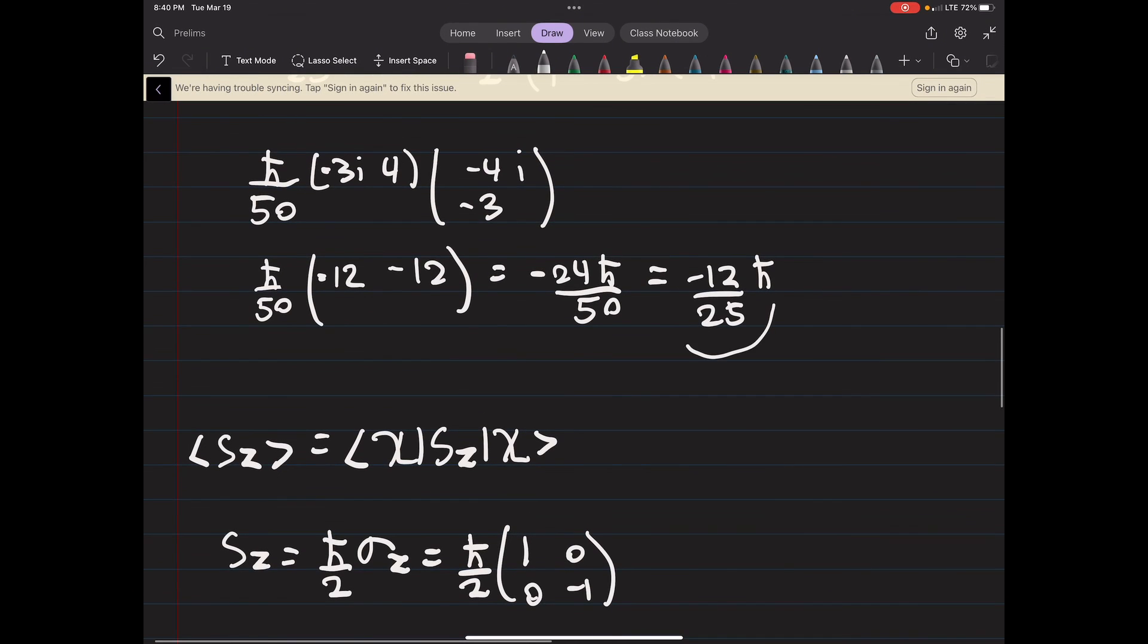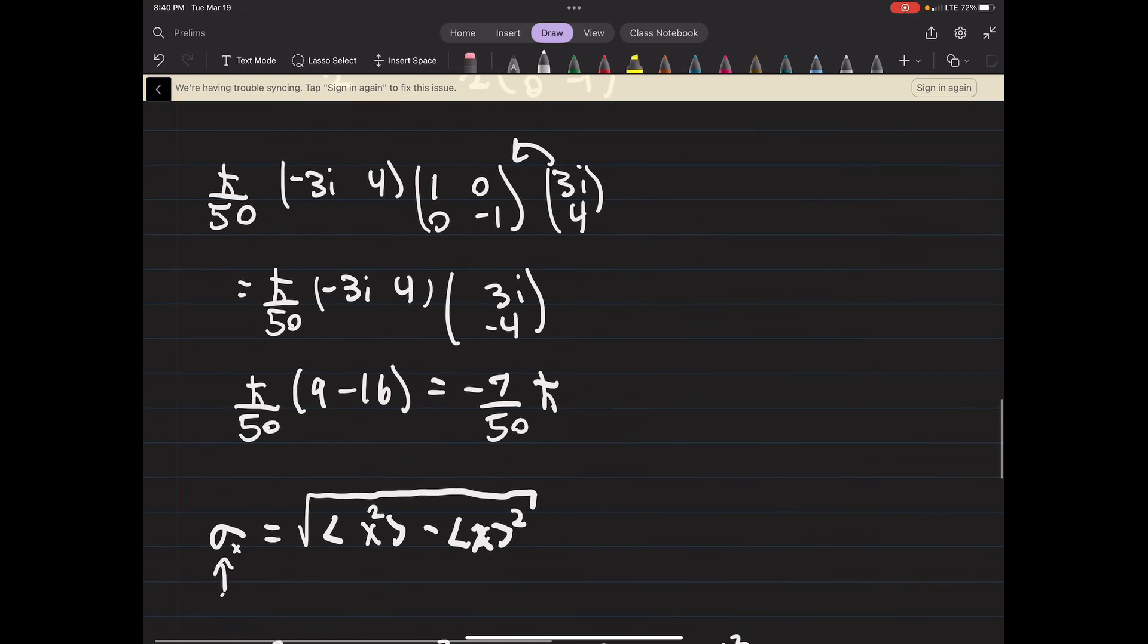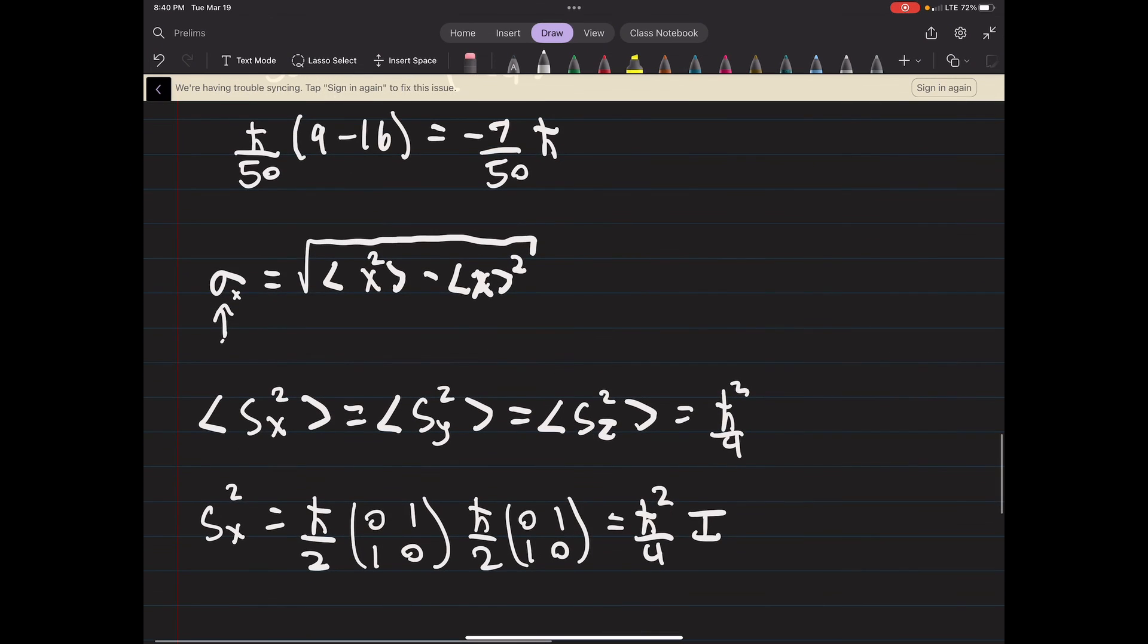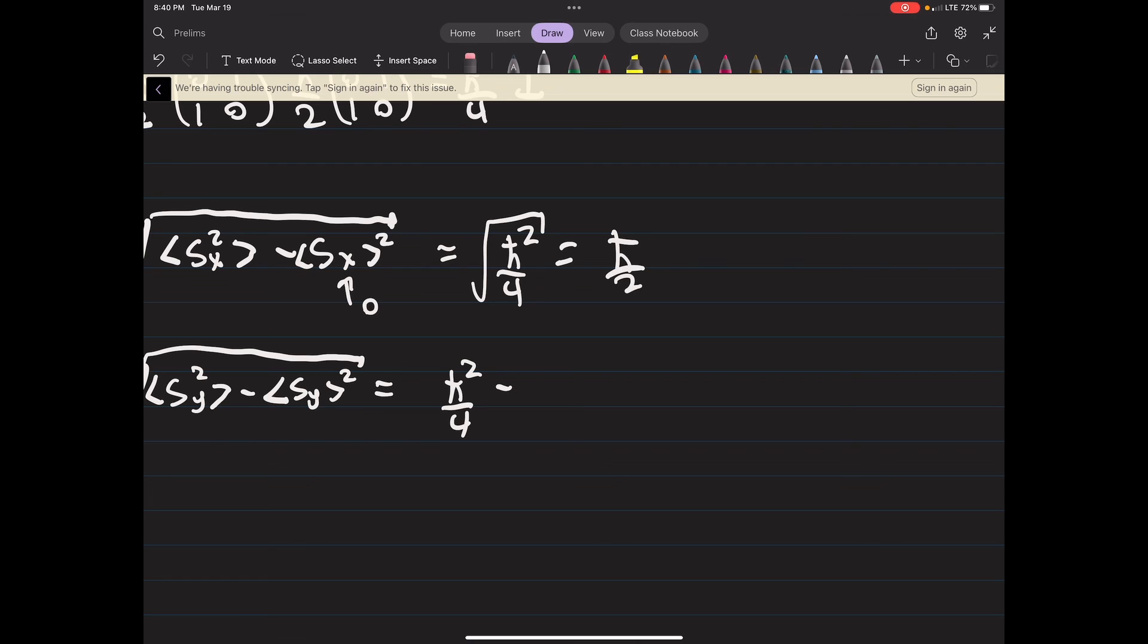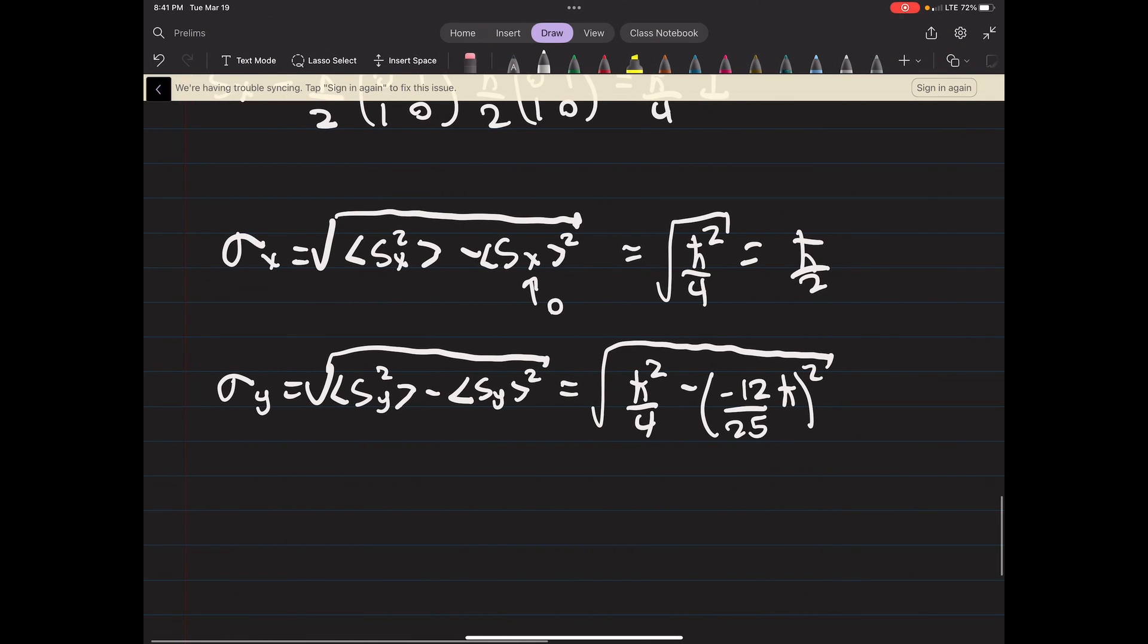So this will be h bar squared over 4 minus this guy squared. Okay, minus (-12 over 25 h bar) squared. And to be honest I have not calculated it yet but you can - I think everyone's okay doing that. And sigma z will be calculated the exact same way.